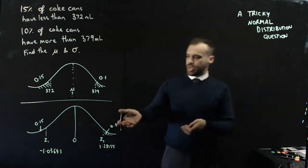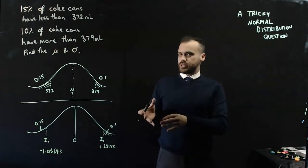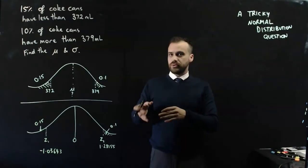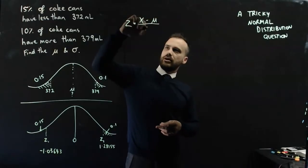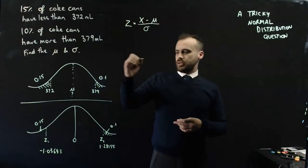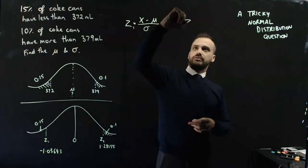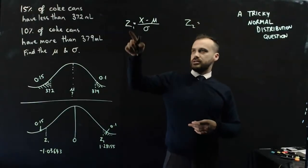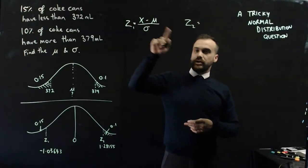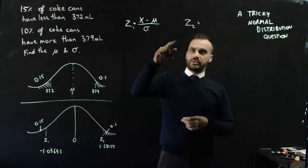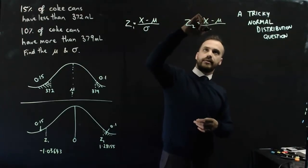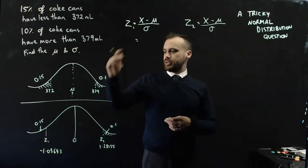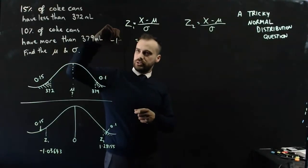I've used my inverse normal on my calculator to get negative 1.03643 and 1.28155. Now that I've done that, I can use that standardization formula that I've used before. That is Z equals X minus the mean over the standard deviation. I can use it twice. I can use it here and here. So Z1 equals the X value minus the mean over the standard deviation and Z2 will be the same.